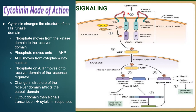Coming to the signaling, cytokinin changes the structure of the histidine kinase domain and a receiver domain. The phosphate moves from the kinase domain to the receiver domain, then from there moves into the AHP domain, and from AHP moves from cytoplasm to the nucleus. The phosphate in the AHP then moves to the receiver domain of the response regulator. Change in the structure of the receiver domain affects the output domain, which then signals the transcription leading to the cytokinin response.